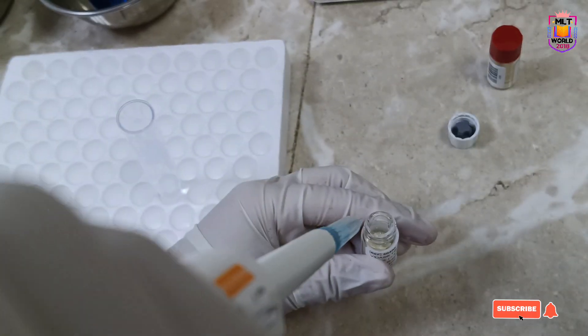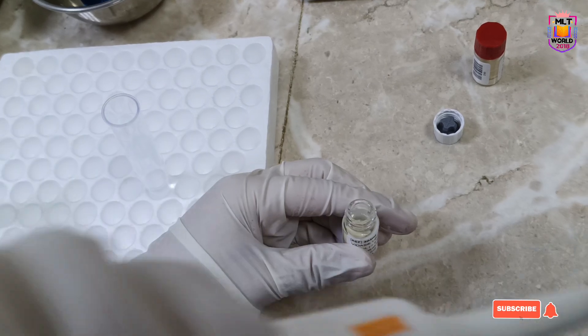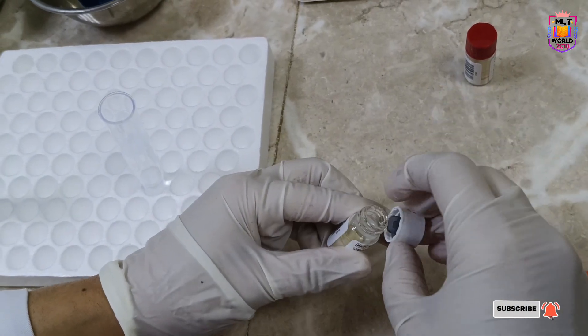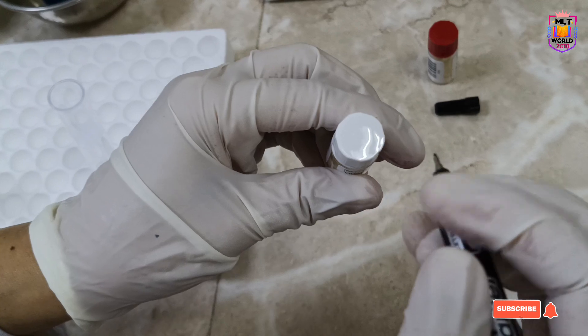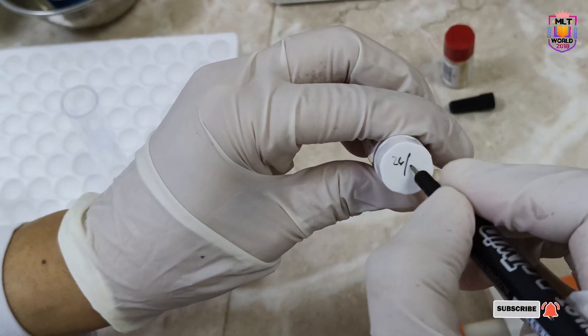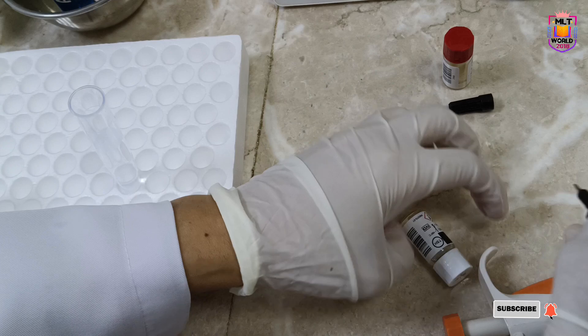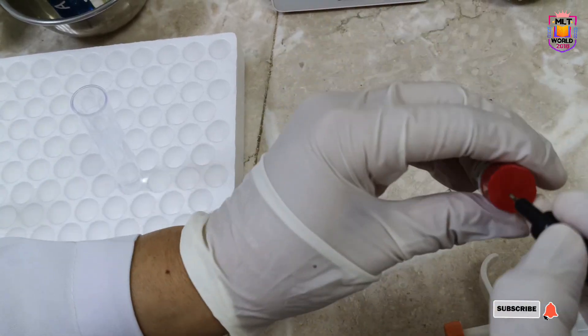Once you confirm that the diluent is mixed properly, then and only then start calibration or control running. Write the date on the vial, because before they were in lyophilized form, and after adding water they are ready to use.